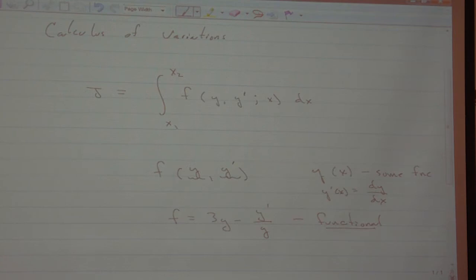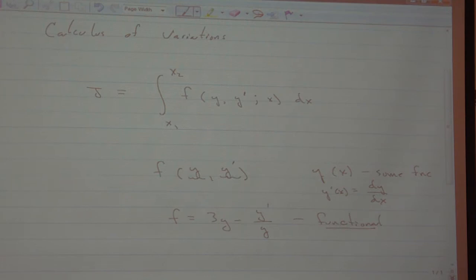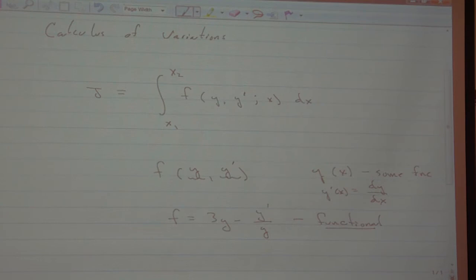So I have this f thing, and f depends on y and y prime, and it kind of depends on x but not explicitly — there aren't any x's there, which is what this semicolon notation means. I take f and I integrate it between x1 and x2, and I call that J. J is also a functional. If I change the function y, I get a different value for J. But J is an explicit number — because once I pick a function y, I put it into f, I integrate it, and I get a number, because a definite integral gives a number.